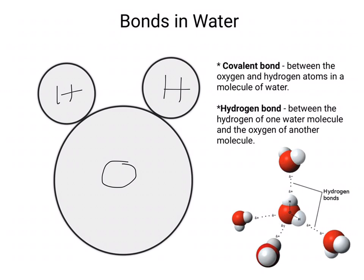You have to label the charges on a water molecule. Hydrogens are going to be positive because they don't have a strong pull on the electron, and oxygen is going to be negatively charged. The covalent bond is the bond found between hydrogen and oxygen because those electrons are being shared. The hydrogen bond is the attraction between the negative side of one molecule and the hydrogen of another.